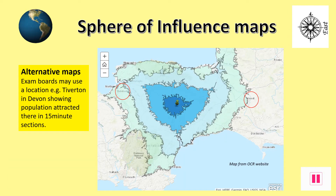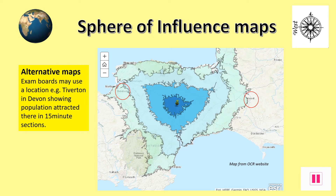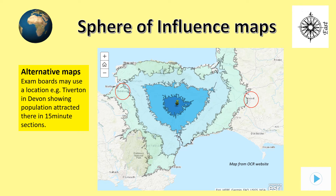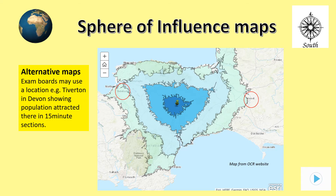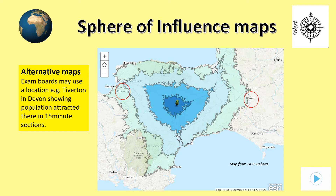Here is a map showing the sphere of influence of the town of Tiverton in Devon. Each shaded area shows how long it would take to travel to or from Tiverton in 15-minute intervals. The very dark shaded area in the centre of the map is the area within 15 minutes of Tiverton. We can see that it takes 45 minutes to get from Bideford in the west, which is shown by the red circle, found by counting the number of 15-minute intervals between the two places looking at the changing colours.